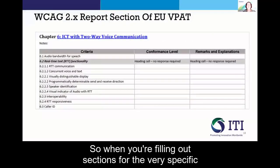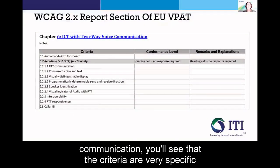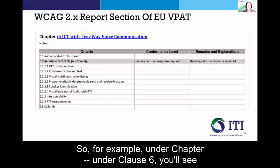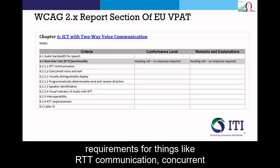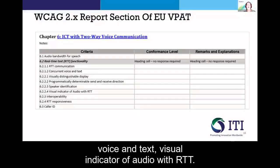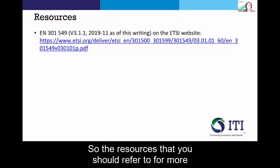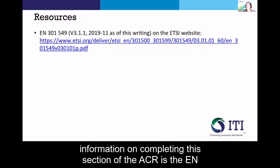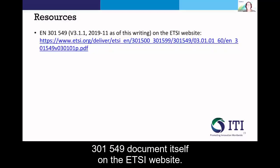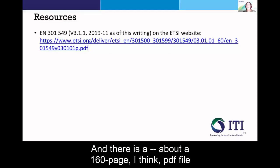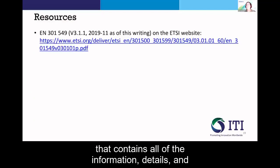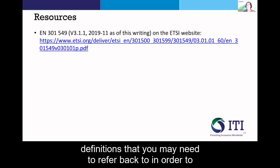When filling out sections for very specific situations such as voice communication, the criteria are very specific to that technology. Under clause 6, for example, you'll see requirements for RTT communication, concurrent voice and text, and visual indicator of audio with RTT. If you're not that type of product, you just mark it as not applicable and move on. The key resource is the EN 301 549 document itself on the ETSI website — spelled E-T-S-I — which is approximately a 160-page PDF containing all information, details, and definitions needed to complete this section correctly.